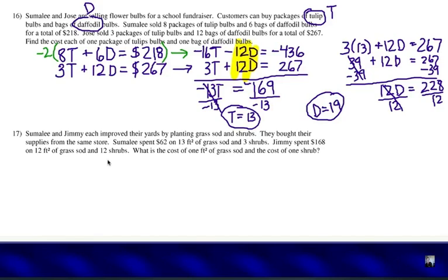You read number 17 and give it a try. After reading number 17, you notice these two equations that we could come up with. I'm going to use G for grass, a square foot of grass sod. And S was going to stand for a shrub. So grass sod and shrubs. 13G plus 3S equals 62. That's similarly, and she spent that much money. And the other person, Jimmy, spent 168 on 12 feet of grass sod and 12 shrubs.